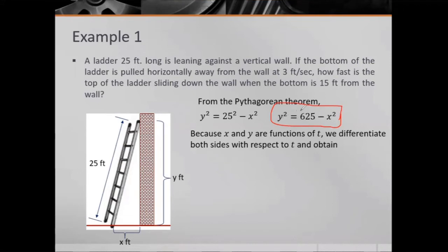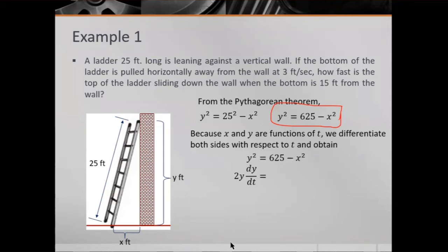We differentiate the left and right sides of the equation. The left side y² gives 2y · dy/dt. The right side: 625 is a constant, so its derivative is zero, and the derivative of -x² with respect to t gives -2x · dx/dt.